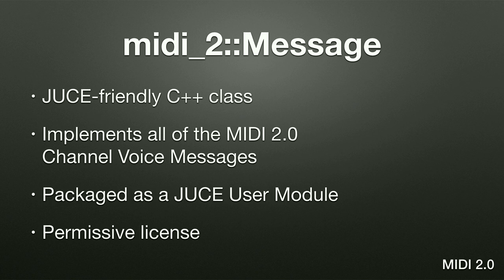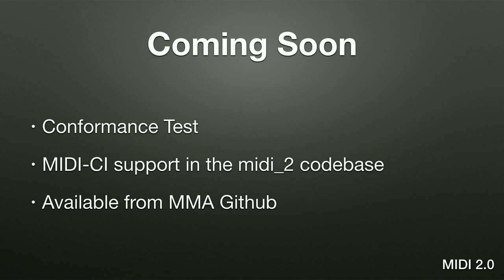Inside MIDI 2.0 Scope is a JUCE-friendly C++ class implementing the MIDI 2 message standards — all MIDI 2.0 messages — packaged as a JUCE user module you can drop into an existing project with a very permissive license. Next steps include building a conformance test app so a manufacturer can sit down with MMA-defined predefined tests to verify correct MIDI 2.0 implementation. MIDI CI support is also coming to the MIDI 2 codebase, and eventually it will be available from the MMA GitHub.